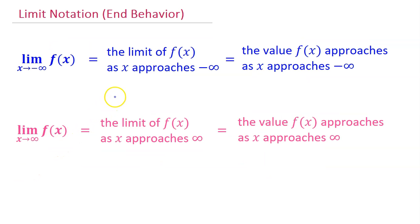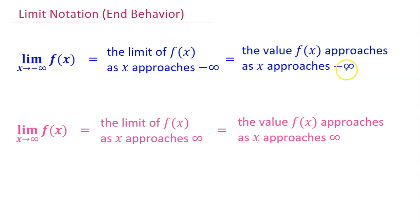In AP Precalculus, we use limit notation to talk about end behavior. This expression would be read: the limit of f of x as x approaches negative infinity. It means the value that f of x approaches as x approaches negative infinity — in other words, the y value that the function approaches as you go to the left.